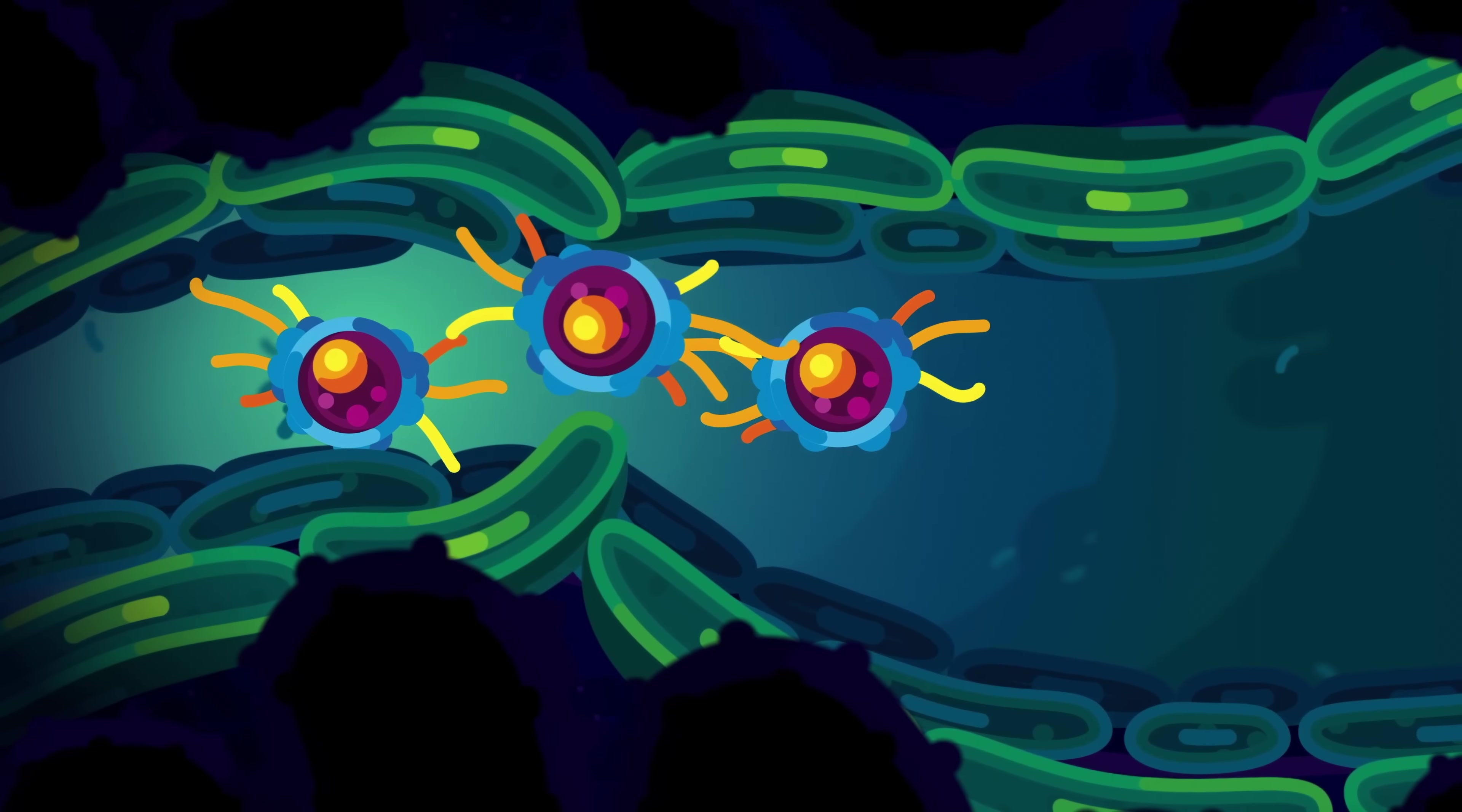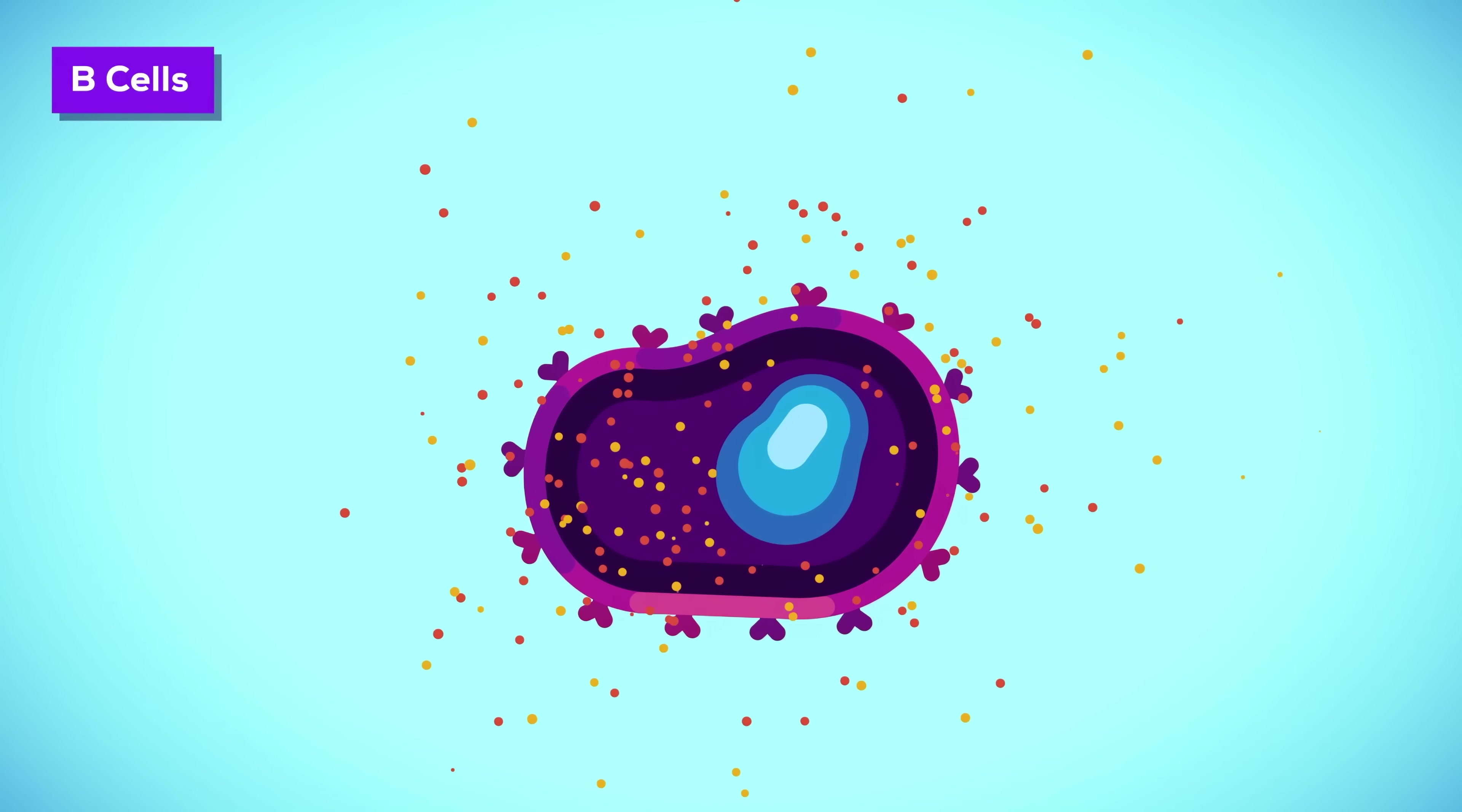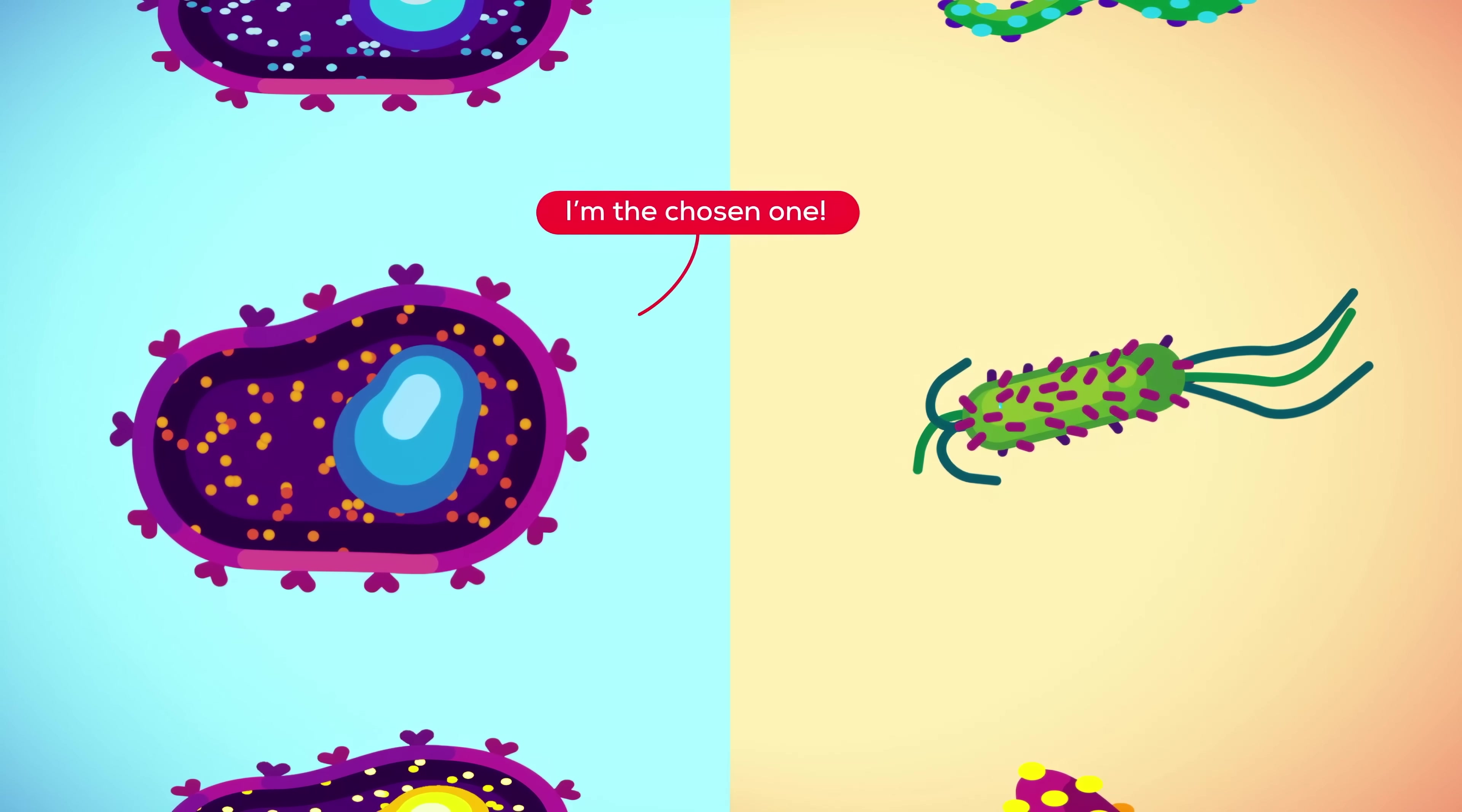Meanwhile, the second group of helper T cells was working on activating another line of defense. B cells, your antibody factories. Antibodies are protein superweapons that look like tiny crabs with two pincers to grab enemies. Just like the helper T cells, there are B cells in your body that are able to make just the right antibodies for every possible enemy.